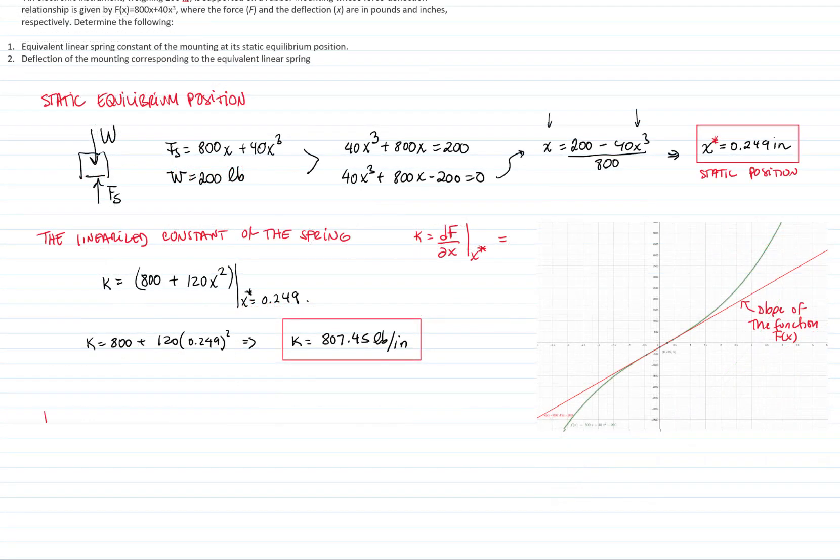Now we want to find the deflection at the equilibrium position. We do our free body diagram again. We have the weight, which is 200 pounds. And now we have that equivalent spring constant times the static deflection. Therefore, we have our spring constant times the static deflection equals the weight.